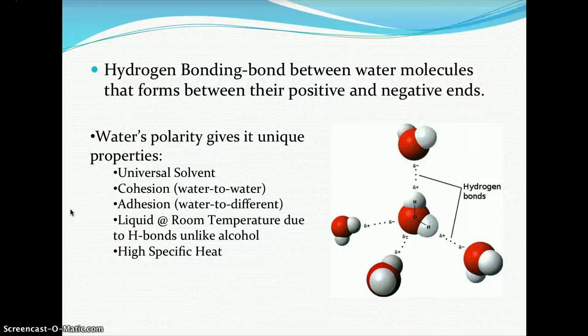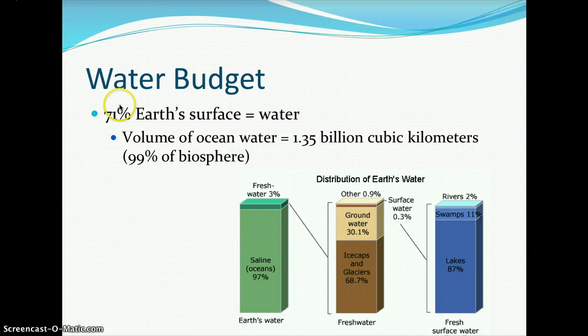If water did not have a high specific heat, slight changes in air temperature would immediately change the temperature of water — but that's not the case. This is why on a cool fall day you can still go to a swimming pool or the beach when air temperatures dip into the lower 70s and the water is still warm. The air temperature is colder, but the water temperature remains very warm.